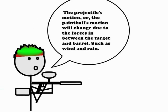The projectile's motion, or the paintball's motion, will change due to the forces in between the target and barrel, such as wind and rain.